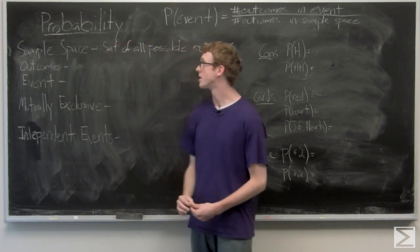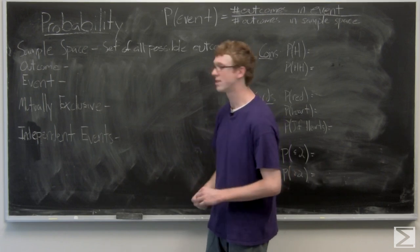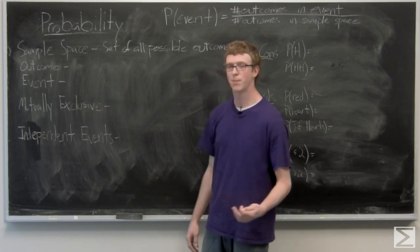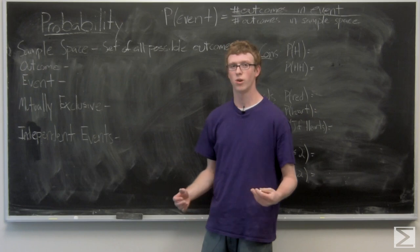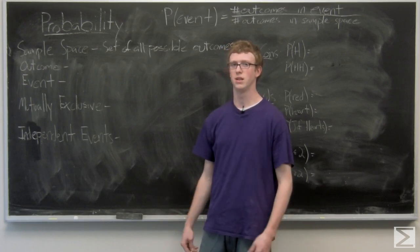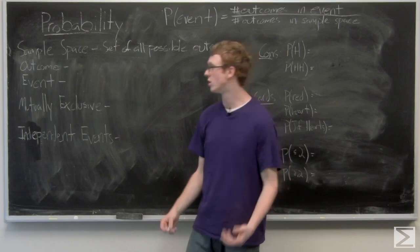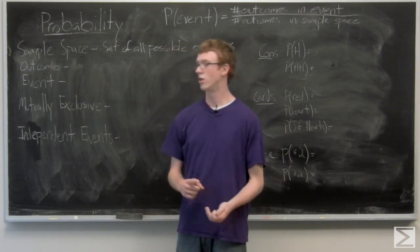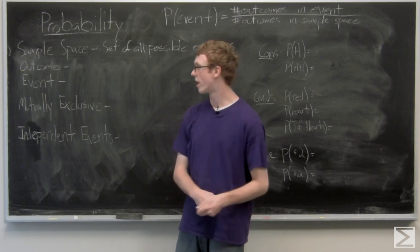So let's just say we're rolling a die, a six-sided die. The sample space would be just on one roll, the sample space would be one through six, and an outcome would be like rolling a one or rolling a two. Those are all single outcomes. Outcomes are unique, the results of a single trial.